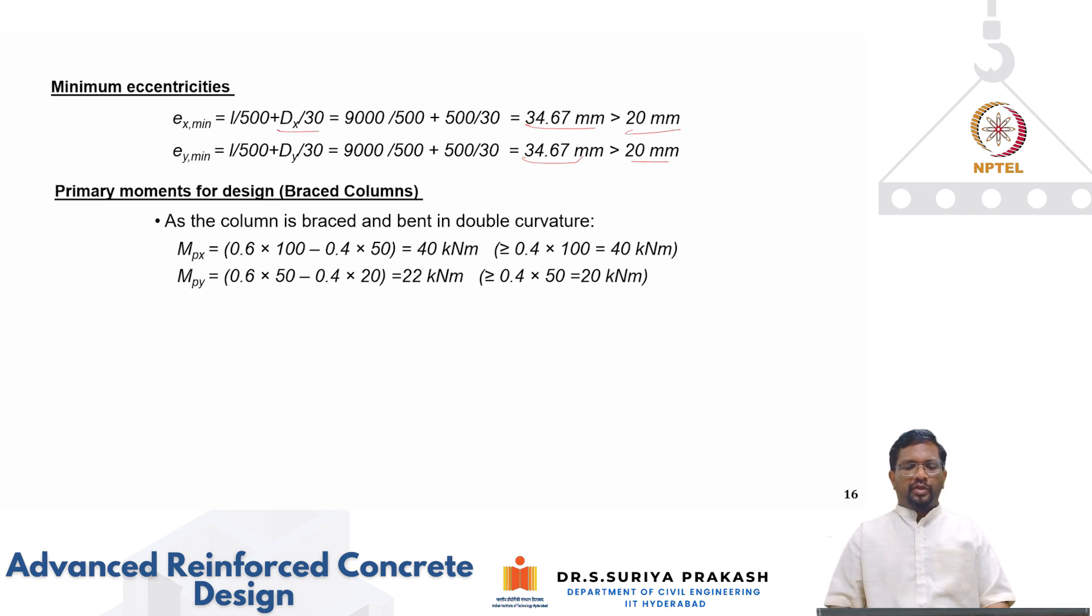Now let us see primary bending moment. Because the column is braced and it is bending in double curvature both axes, primary bending moment is 0.6 times m2 minus 0.4 times m1. Now why is that minus sign coming? For column that is bending double curvature, signs for m2 and m1 will be different. So m2 is positive, 0.6 times 100 minus 0.4 times 50 so you get 40. Similarly primary bending moment about y axis is 22.